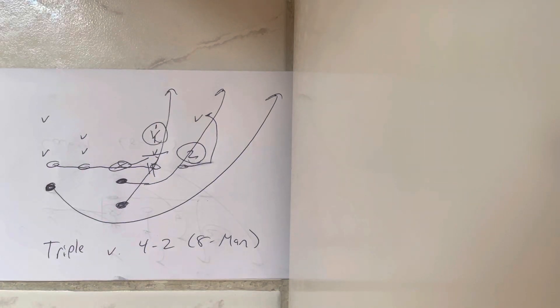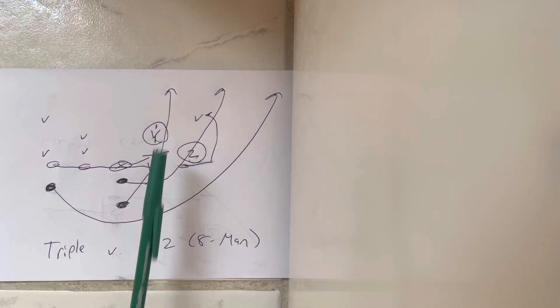Dr. Selle here, and when you run triple option versus a 4-2 in 8-man, you're going to put the mic backer in the counter as number one. The reason for it is because you don't have to place that A-back to load him in case they scrape exchange, because if they do that, you're 3-on-3 on the perimeter.